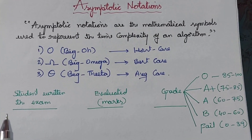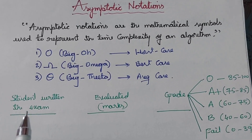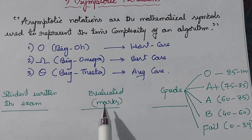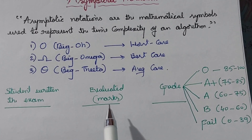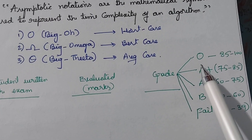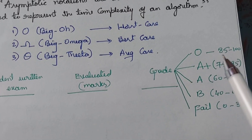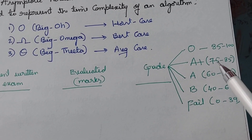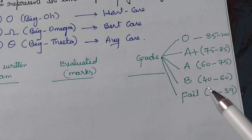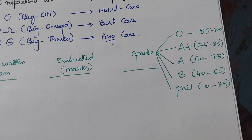Assume a student is going to write an exam. After submission, the answer script is evaluated and the student gets some marks, and based on those marks a grade is allocated. Marks between 85 to 100 get grade O (outstanding); 75 to 85 gets A+; 60 to 75 gets A grade; 40 to 60 gets B grade; and anything less than 39 falls under the fail grade.